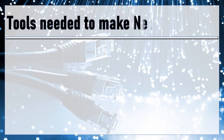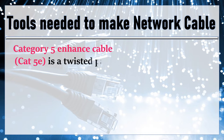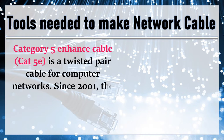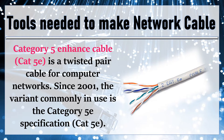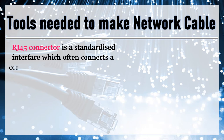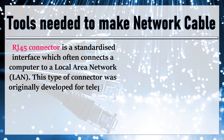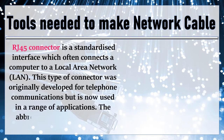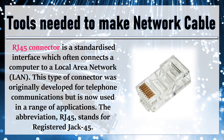We will now identify the different tools needed to make network cable. First is the Category 5 Enhanced Cable, CAT5E, a twisted pair cable for computer networks. Since 2001, the variant commonly in use is the Category 5E specification. Next is the RJ45 connector, which is a standardized interface that often connects a computer to a local area network, LAN. This type of connector was originally developed for telephone communications but is now used in a range of applications. RJ45 stands for Registered Jack 45.